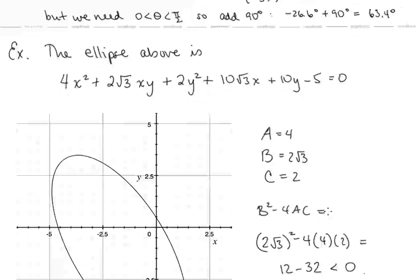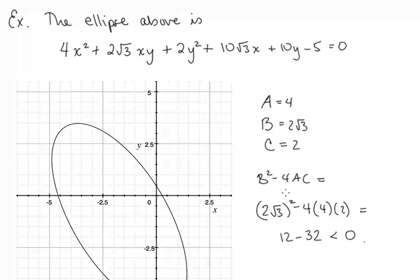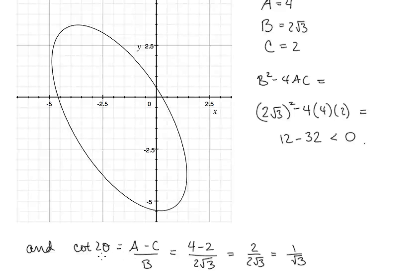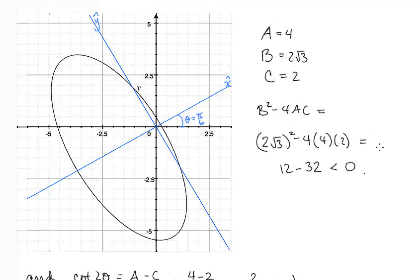The rotated ellipse we saw above has equation 4x² + 2√3·xy + 2y² + 10√3·x + 10y − 5 = 0. Here a = 4, b = 2√3, c = 2. So b² − 4ac is negative, giving us a rotated ellipse. Setting cot(2θ) = (a − c) / b gives (4 − 2) / (2√3), which simplifies to 1/√3. Taking the reciprocal, tan(2θ) = √3, so 2θ = π/3, and therefore θ = π/6.